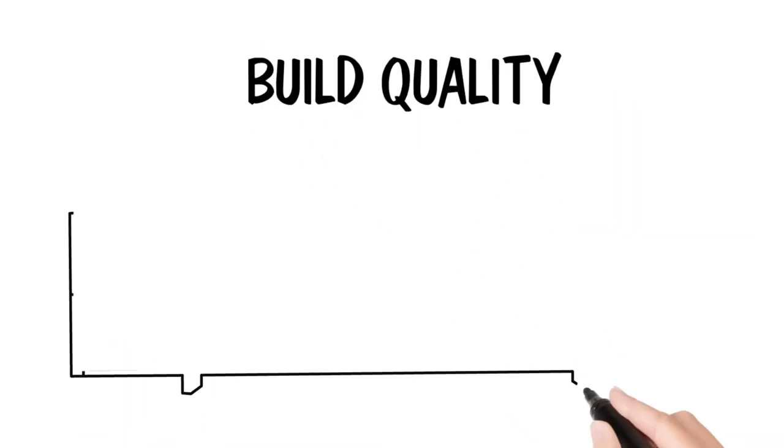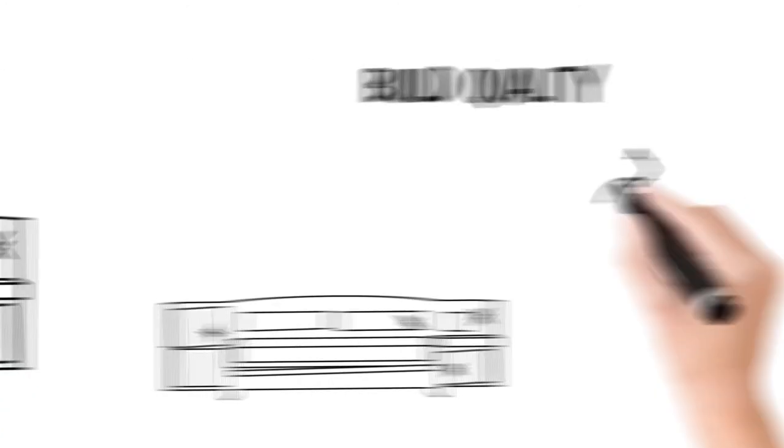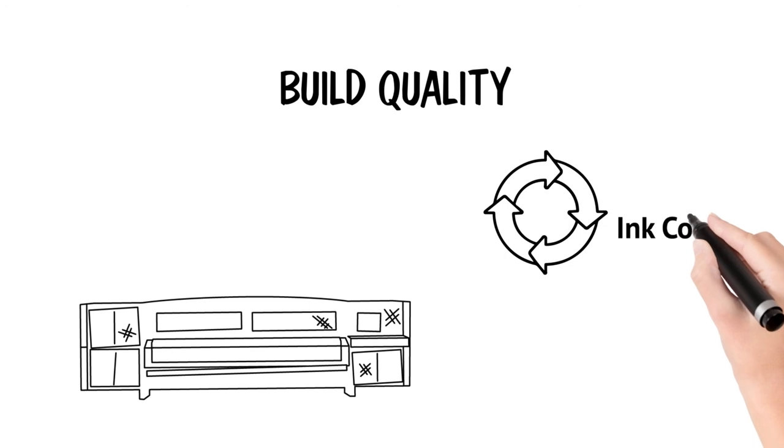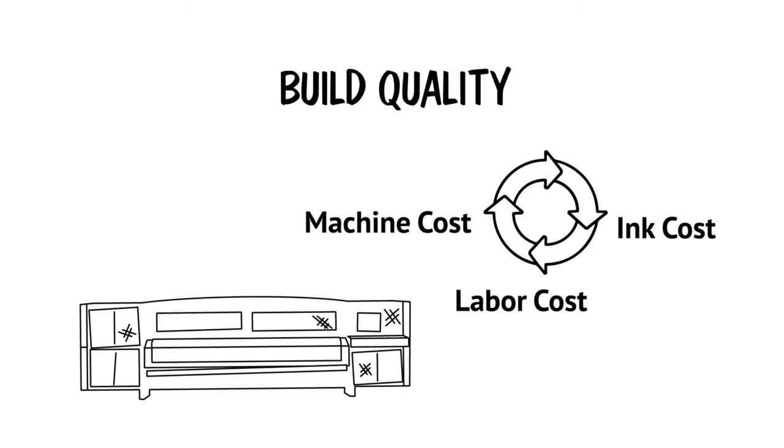Finally, build quality. As some machines age, their image quality degrades, which affects that print speed and that ink cost, which then affects the labor cost, which then affects machine cost. The cycle just keeps going.